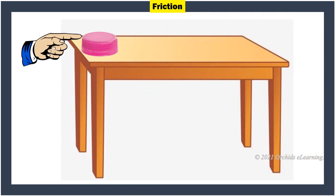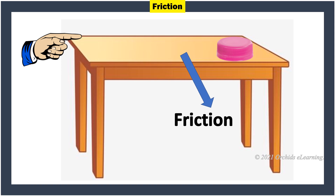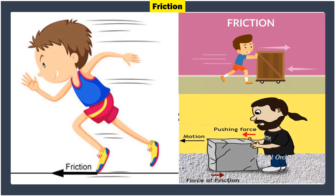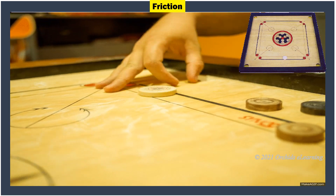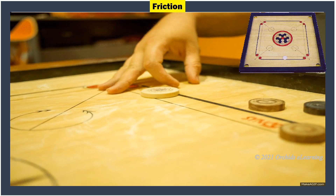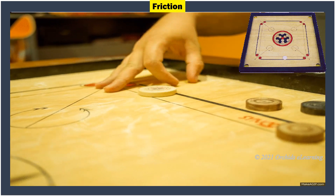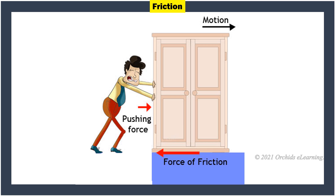Friction: When a bottle top is pushed across a table, it stops after moving a certain distance. It stops because of friction. The force that is present when two objects are in contact with each other and opposes the motion of one object across another is called friction. One more example is playing carom — when we push the disc on the carom board, it stops after moving some distance.